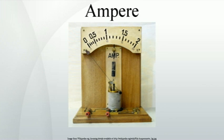Ampere's force law states that there is an attractive or repulsive force between two parallel wires carrying an electric current. This force is used in the formal definition of the ampere, which states that it is the constant current that will produce an attractive force of 2×10⁻⁷ newton per meter of length between two straight, parallel conductors of infinite length and negligible circular cross-section placed one meter apart in a vacuum.